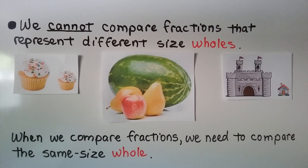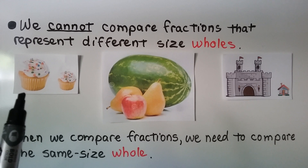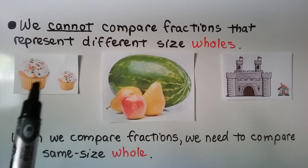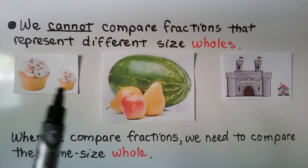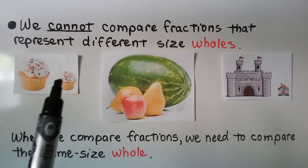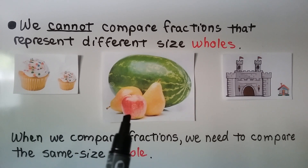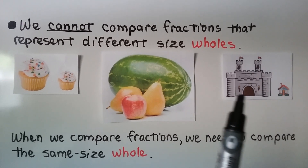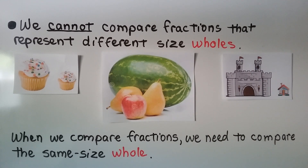We cannot compare fractions that represent different size wholes. Half of one cupcake is not going to be the same as half of another cupcake — they're two different sizes; the whole is two different sizes. We can't compare half of an apple to half of a watermelon, or half of a castle to half of a house — they're different size wholes. When we compare fractions, we need to compare the same size whole.